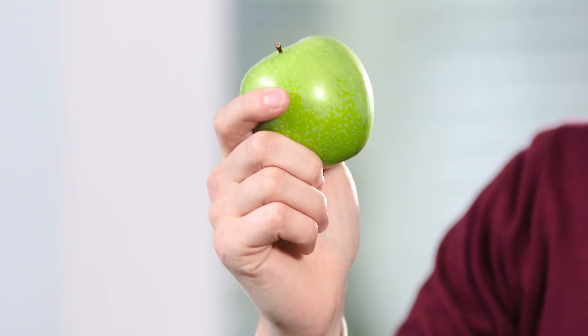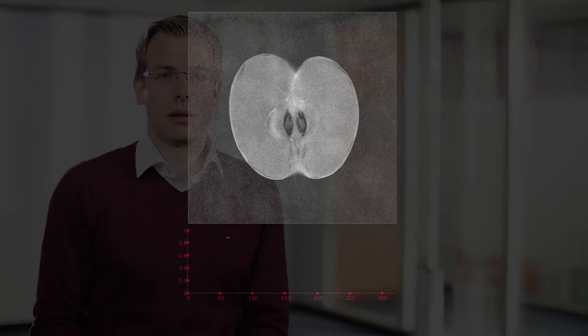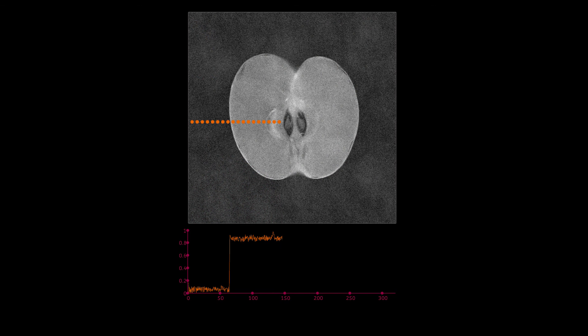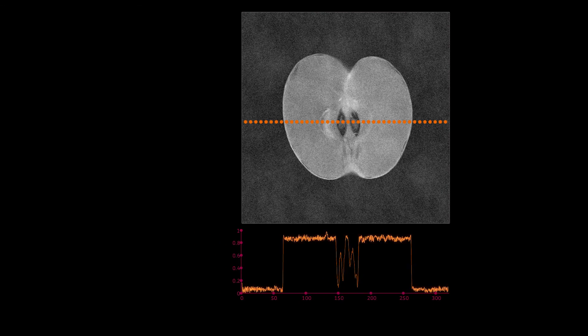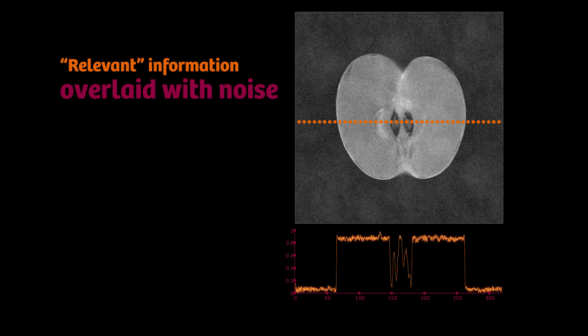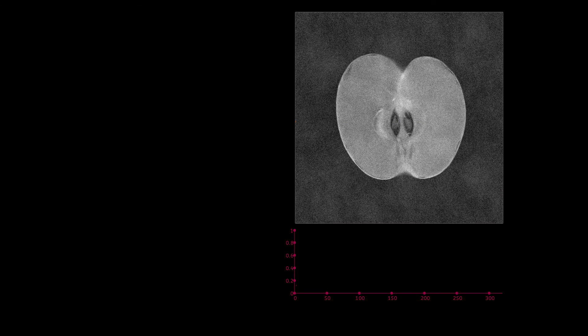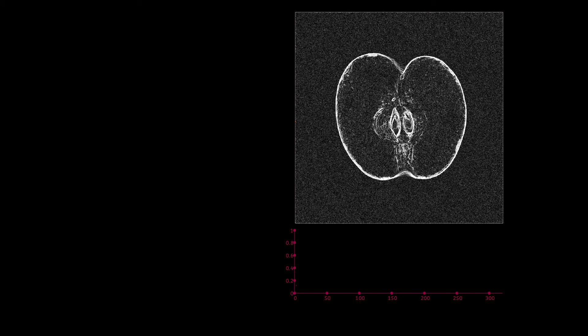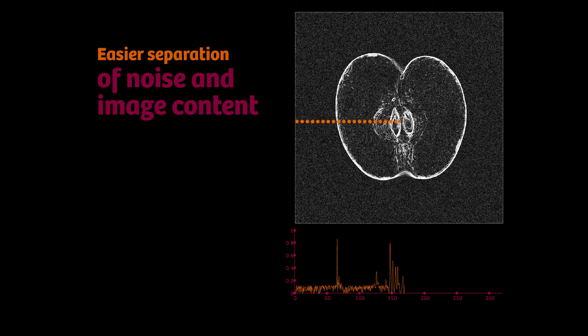So what does transform sparsity mean? Let's go back to the example of our noisy apple, which we acquired with incoherent subsampling. If you have a closer look and select one line of the image, the image intensity in this line clearly shows that the actual relevant information is overlaid with noise, which we ideally would like to separate from the valuable information. Therefore, we transform the image into another representation where it's easier to distinguish between useless and useful information.